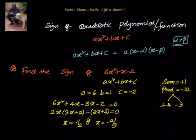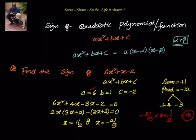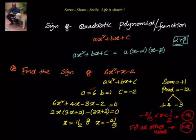We identified that the zeros are 1/2 and −2/3. Now, the sign of the function: when x is between −2/3 and 1/2, the sign is negative, because a is positive. For all other values on the real number line, the sign of the quadratic polynomial is positive.